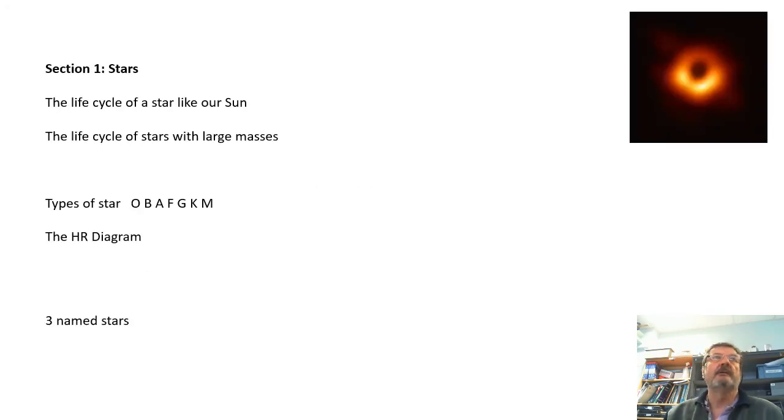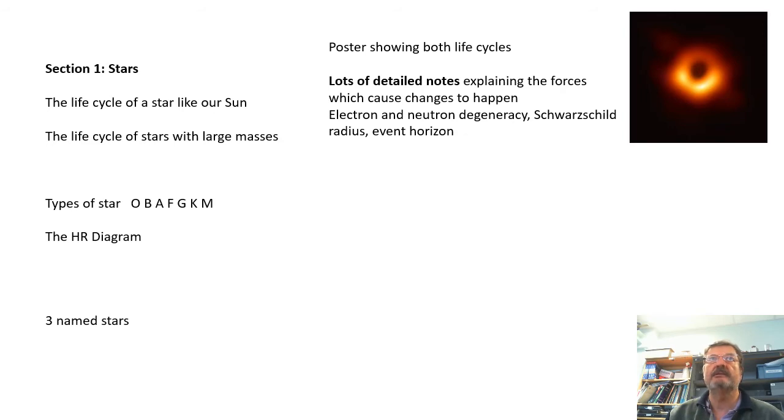Section 1 is about stars. Present information about the life cycle of a star like our Sun and then the life cycle of much more massive stars. Do a poster for both showing the life cycle of both stars and then lots of detailed notes explaining what's happening at each stage, what happens to the forces involved - fusion forces pushing outwards and gravity pulling inwards. For different stages in the star's life, the balance between these forces changes.